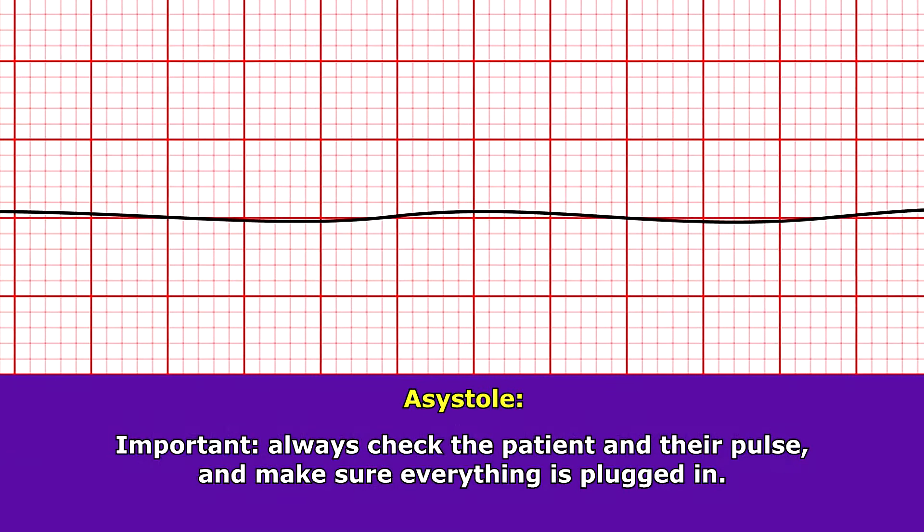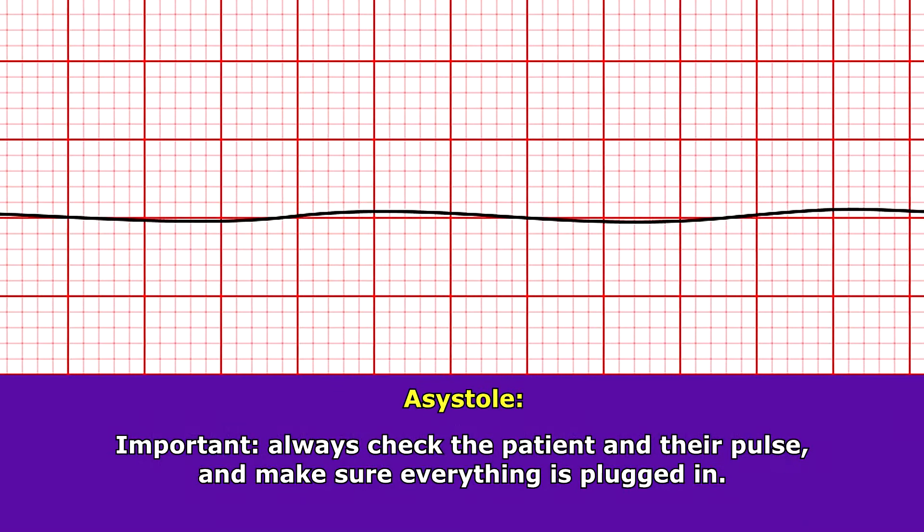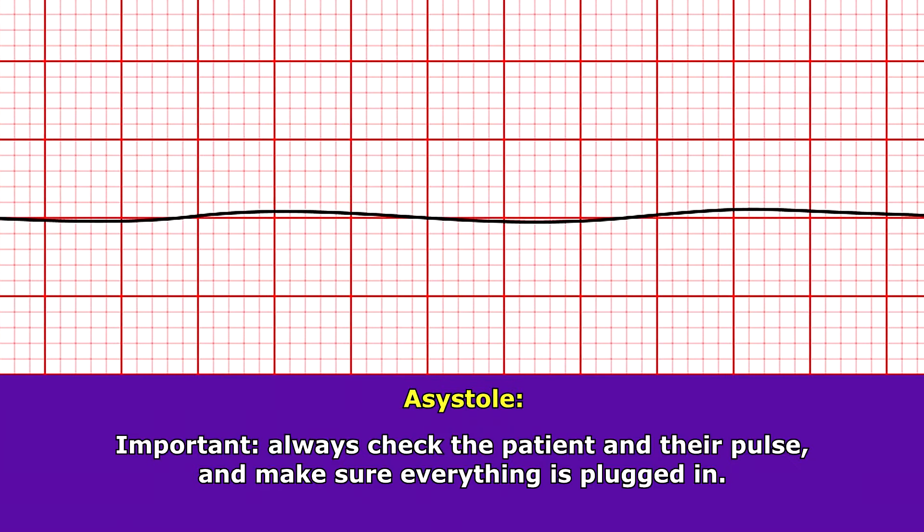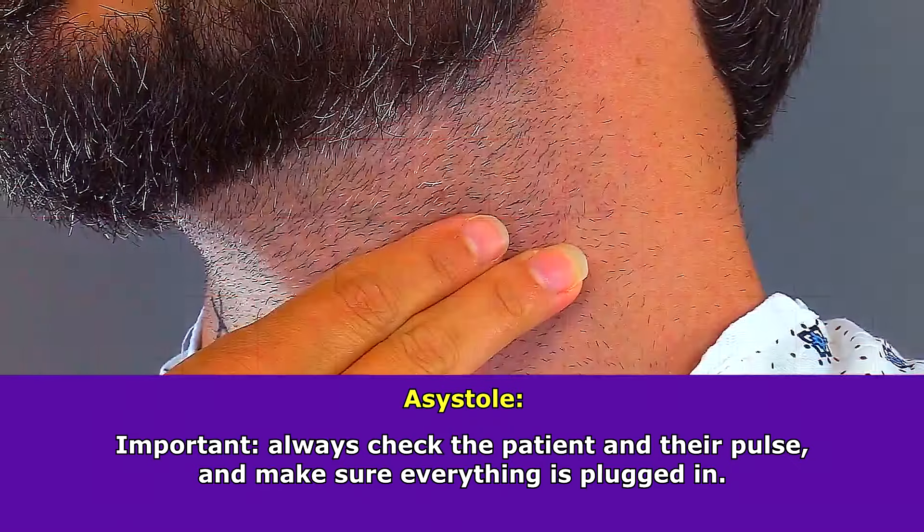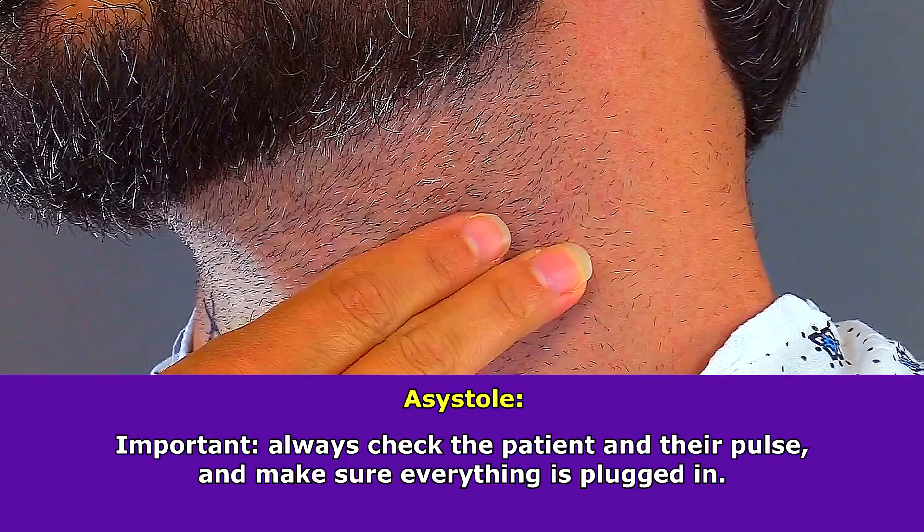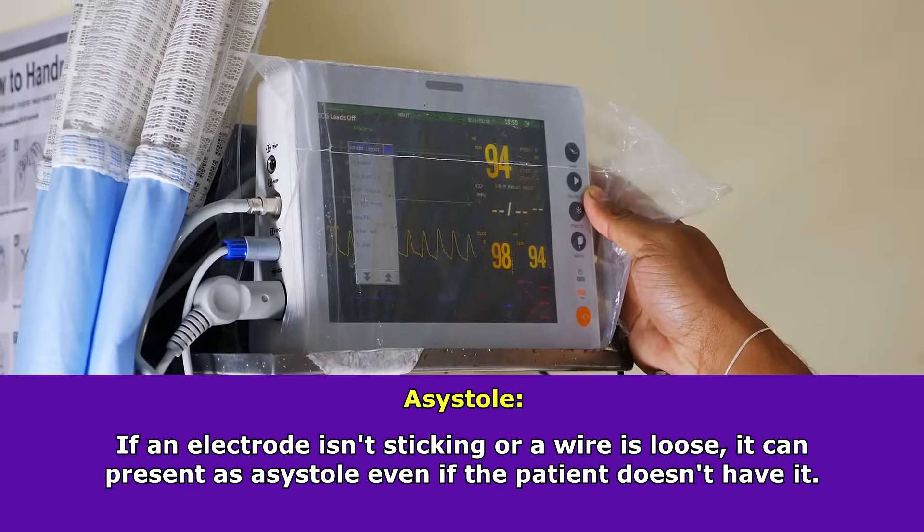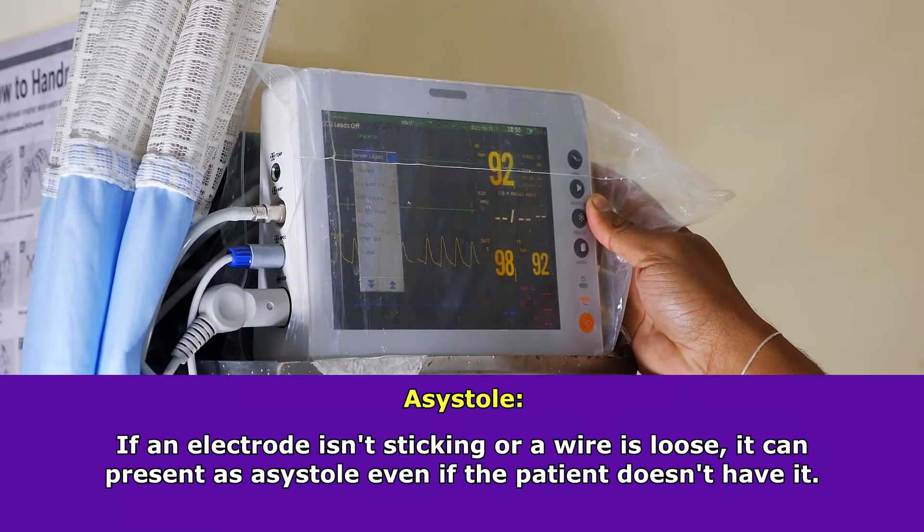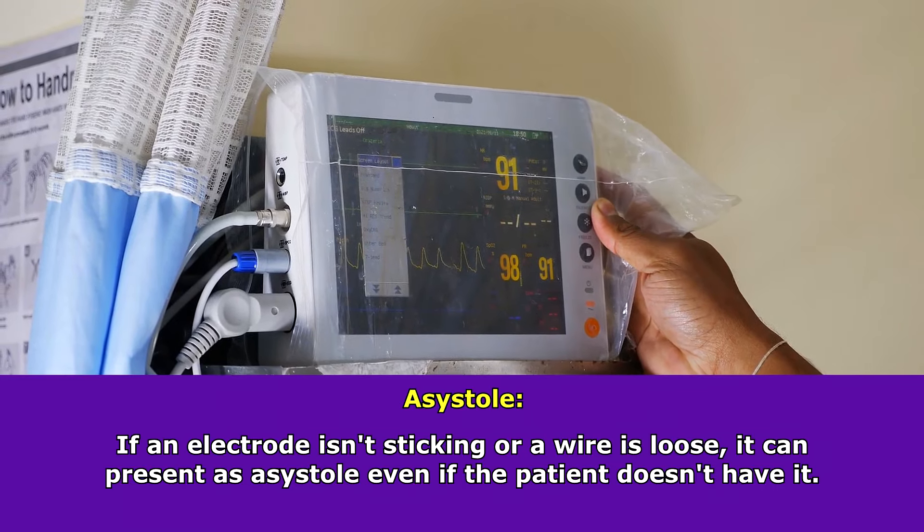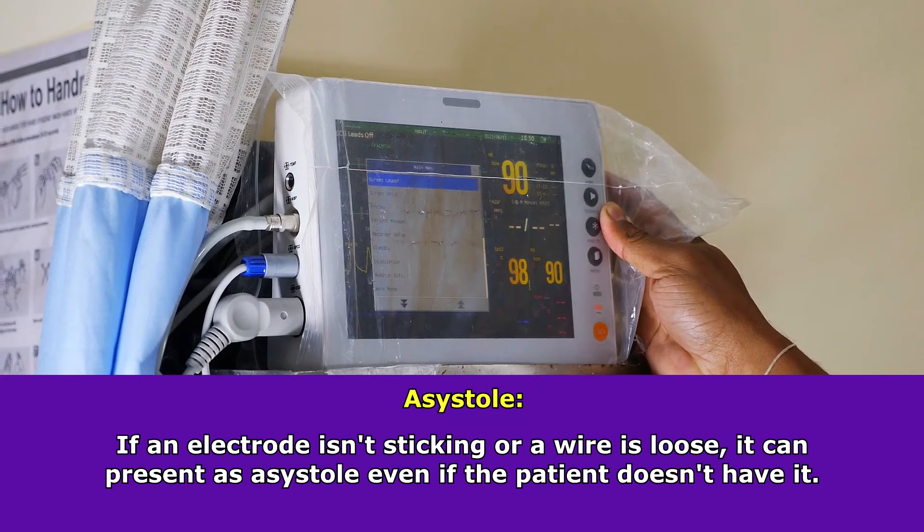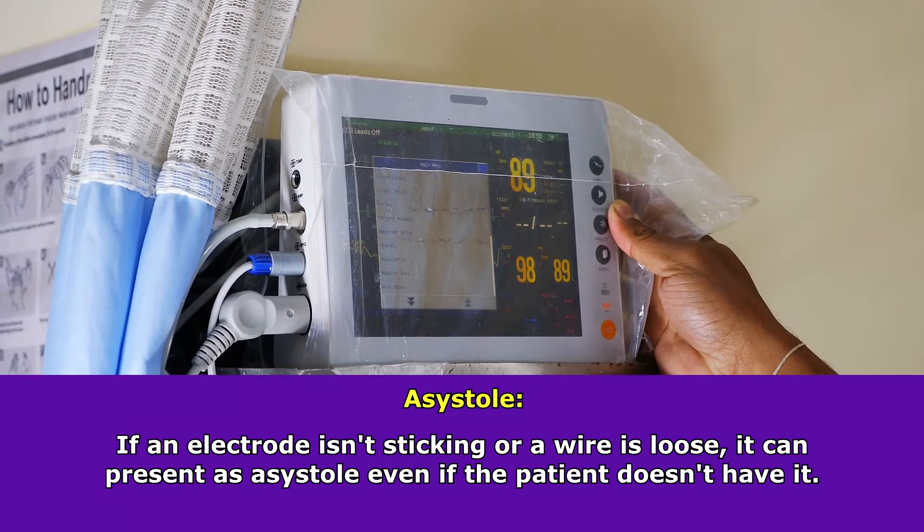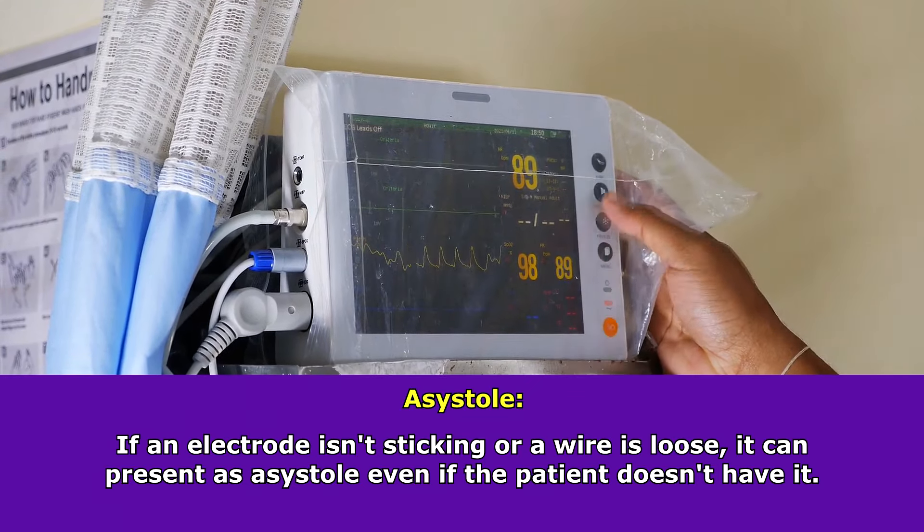Whenever you see a flat line on an ECG, you want to immediately check your patient. Always check them, check their pulse, and make sure everything is plugged in and attached. Because if those telemetry wires become unplugged or an electrode isn't sticking right, or you have a bad connection, it can present as asystole and you don't truly have it. Always check your patient.